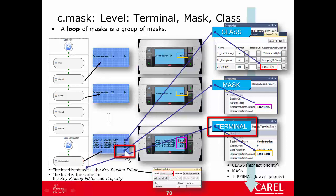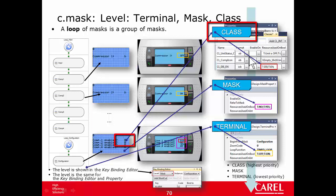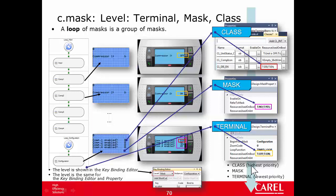If you click the background of a mask, you select the mask level — the properties and code you write there will be used only in the current mask. If you click a specific class, you select the class level — the properties and key functions will be used only in that specific class. There is a priority: the highest is the class, which overrides mask level, which overrides terminal. Terminal overrides nothing because there is nothing below.